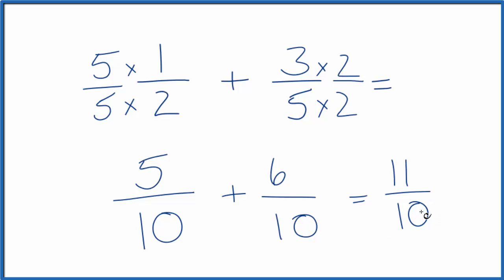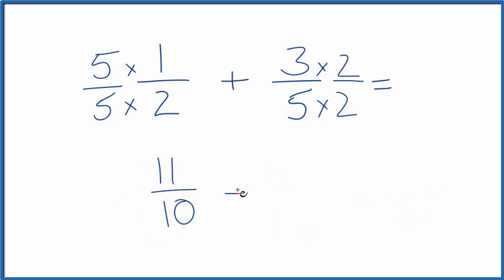This is an improper fraction because the 11 is bigger than the 10. We can change this to a mixed fraction as well. Let's do that. So 10 goes into 11 just one time with one left over, so we can call this 1 and 1 tenth. And you can check that. 1 times 10, that's 10. 10 plus 1, that's 11, so 11 tenths.